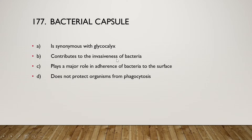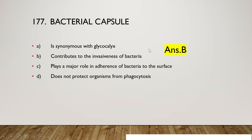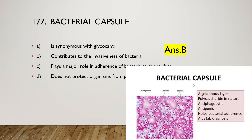The next question is: bacterial capsule is synonymous with glycocalyx, contributes to the invasiveness of bacteria, plays a major role in adherence of bacteria to the surface, or does not protect the organism from phagocytosis? The right answer is option B. The bacterial capsule is a gelatinous layer made up of polysaccharide, and it is an antiphagocytic compound. It is antigenic and helps bacteria adhere to other microorganisms or human cells.